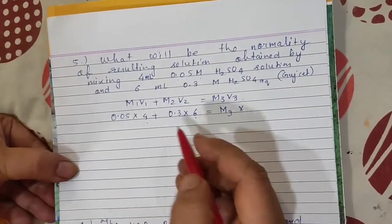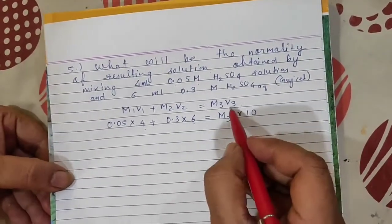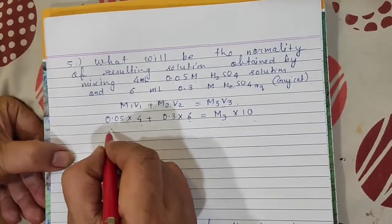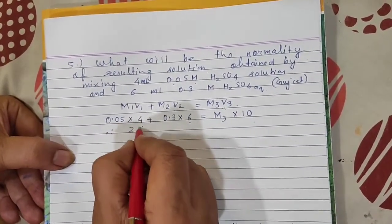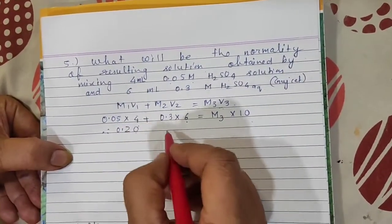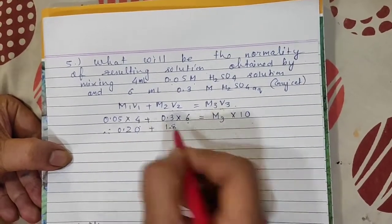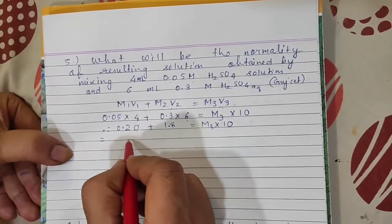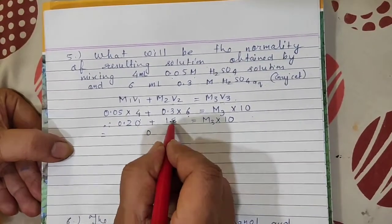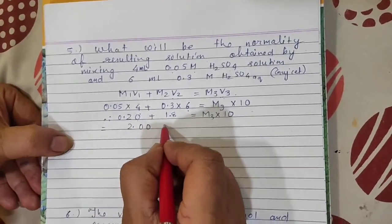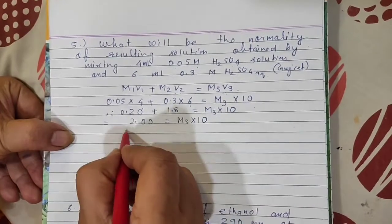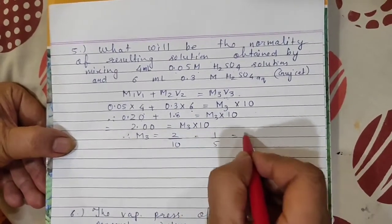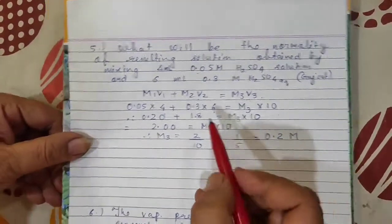What is our M1? First molarity is 0.05 into volume is 4, plus M2 is 0.3 into V2 is 6, equals M3 we don't know, let it be M3, into V3. The total of both ml, 6 ml and 4 ml, that is 10 ml. Therefore, multiply: 5 times 4 is 20, so 0.20. Then plus 6 times 3 is 18, 1.8 equals M3 times 10. Add 1.8 plus 0.20 equals 2 equals M3 times 10. Therefore M3 equals 2 upon 10 equals 1 upon 5 equals 0.2 molar.